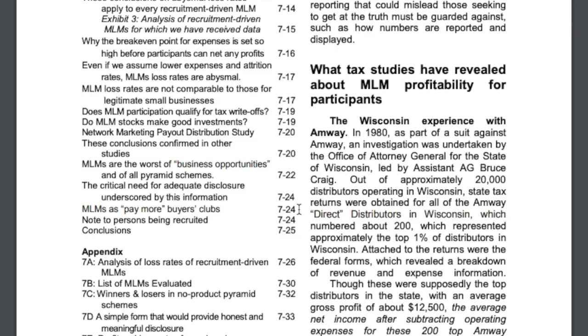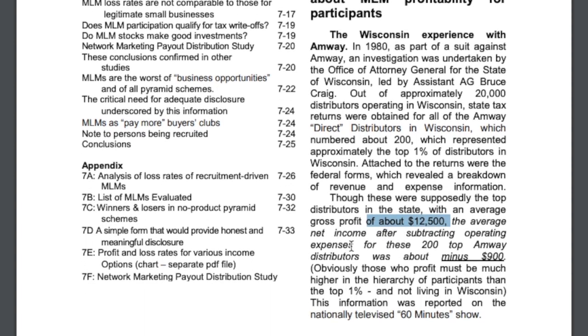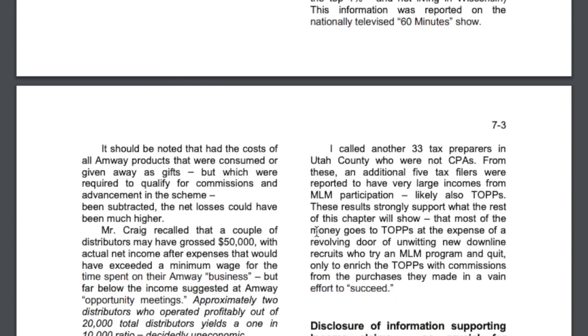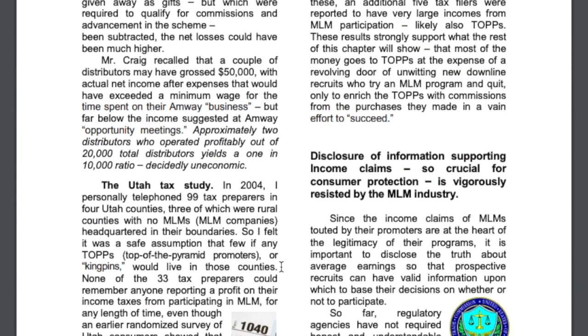This next segment is interesting. He details how in Wisconsin in 1980, there was an investigation where they looked at 20,000 distributors up in Wisconsin, and basically state tax returns came back for about 200 of them, which represented approximately the top 1% of distributors in Wisconsin. There was some gross profit of about $12,500, and if you looked at the net income after subtracting operating expenses for these 200 top Amway distributors, it was about minus $900, which means even the people at the top were losing money. Down here, he details two distributors who operated profitably out of 20,000, so basically one in 10,000, and certainly not the numbers that they share.